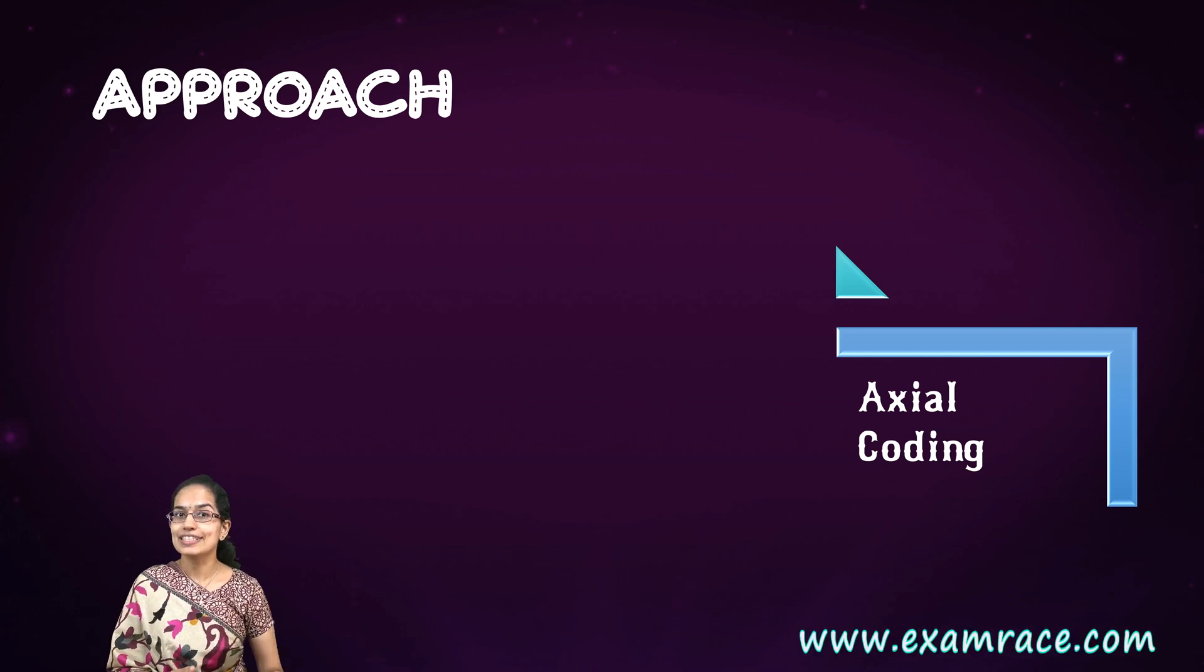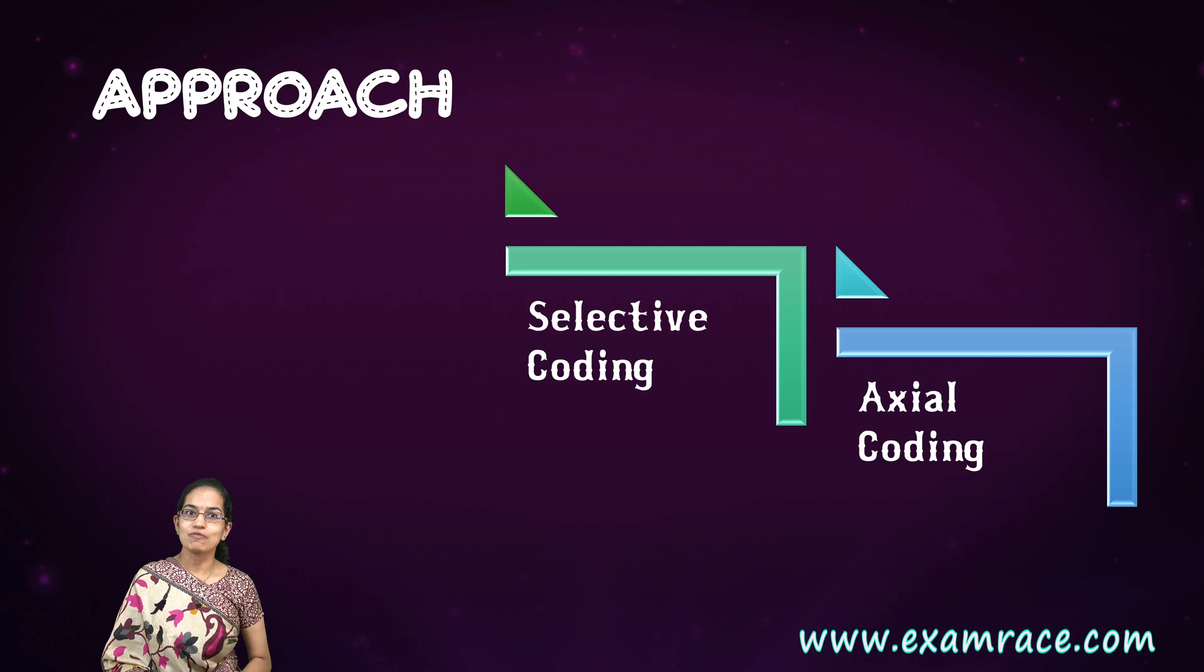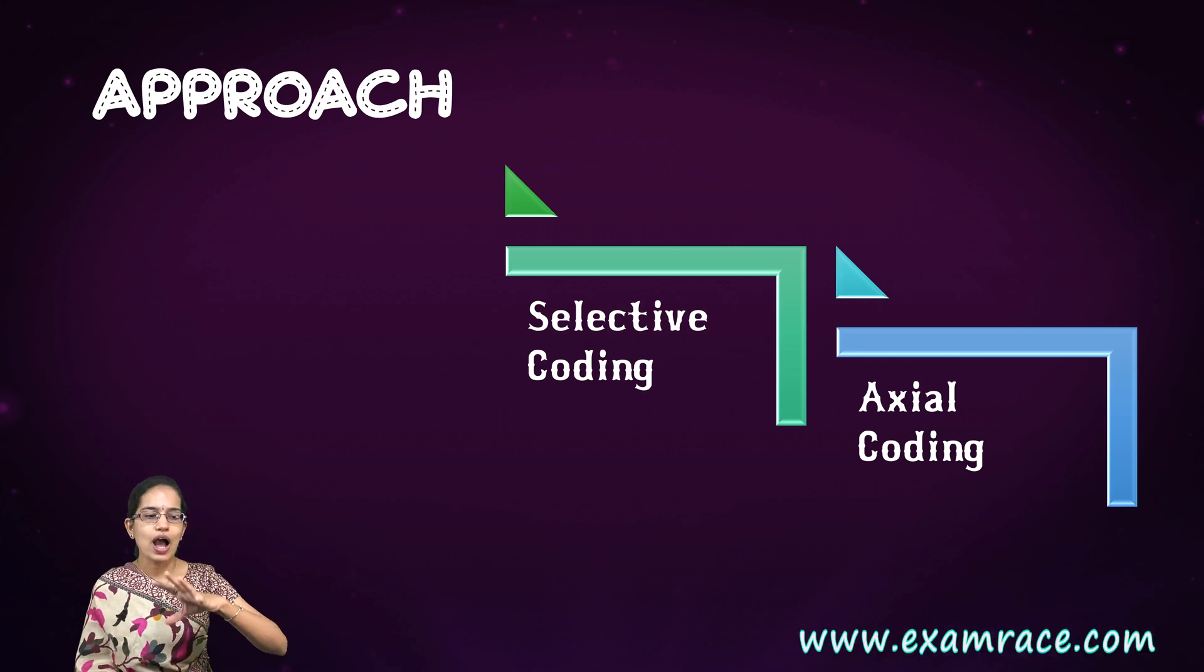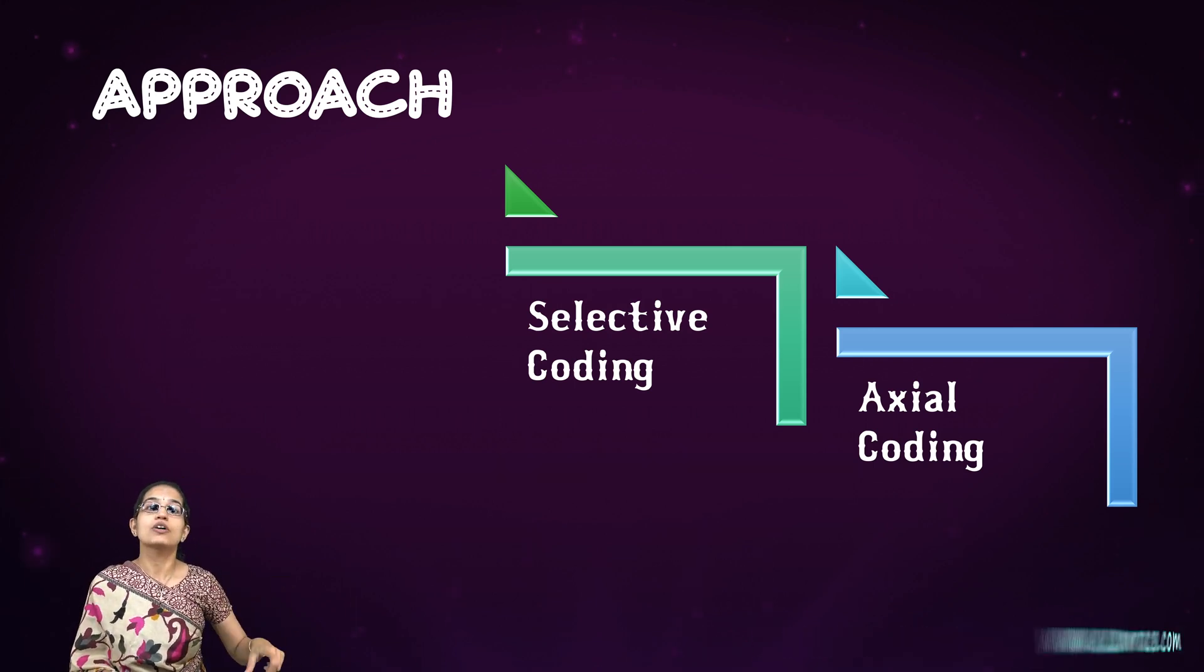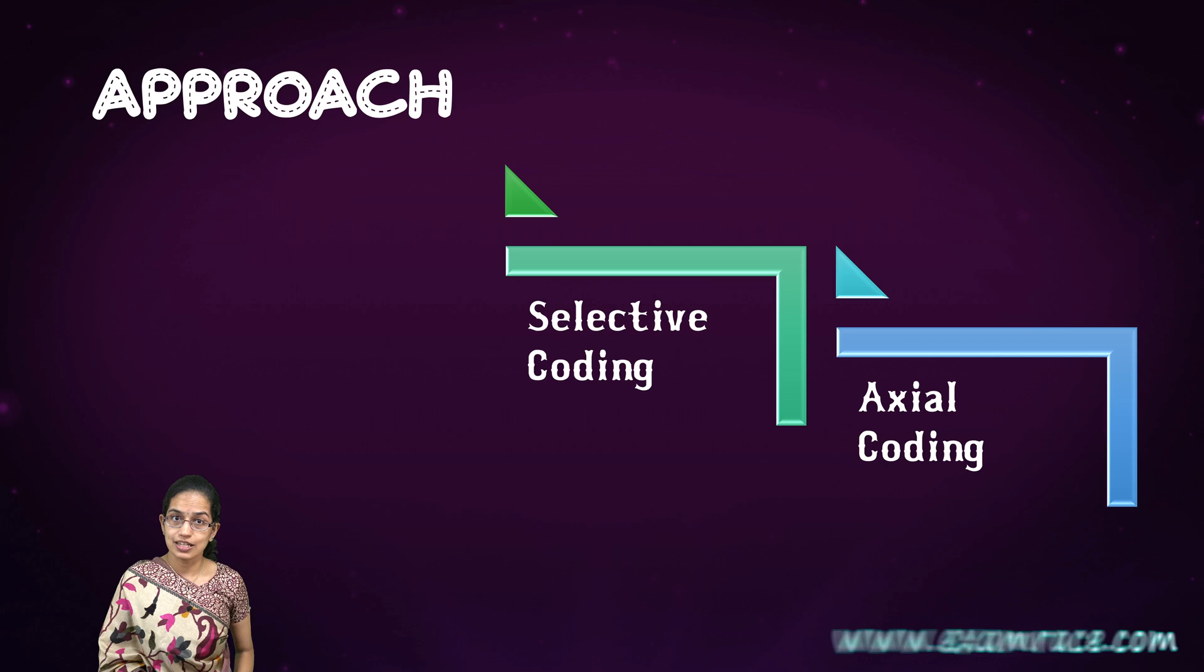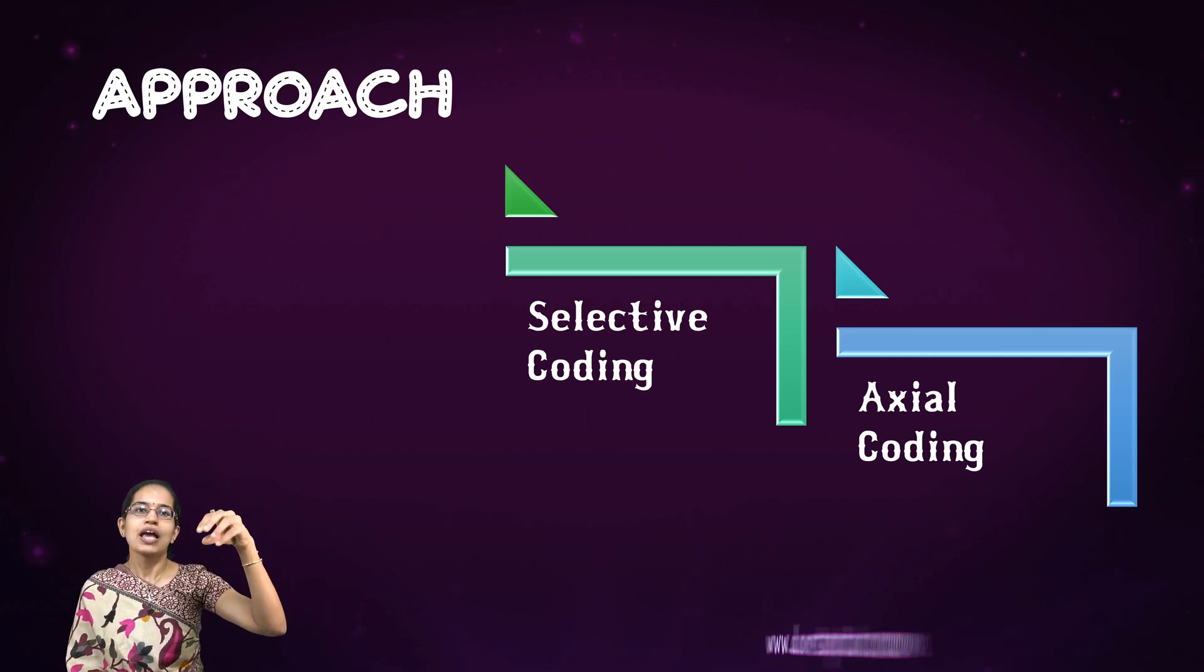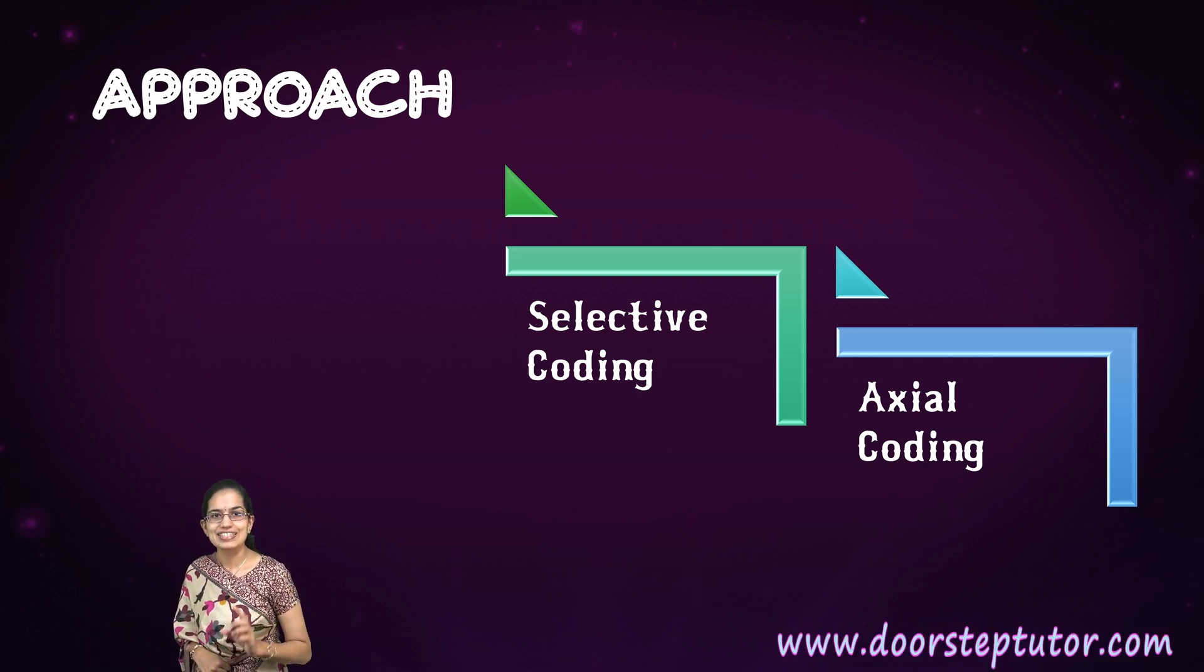Beyond axial coding is yet more interesting, which is selective coding. Selective coding implies that now I am trying to explain the theory with the core processes that are there. All the parameters that I have taken into account in the axial coding, I am trying to relate all those together and explain the process. This is selective coding.